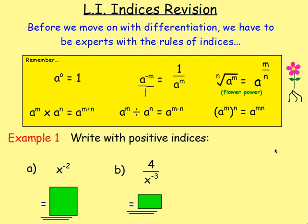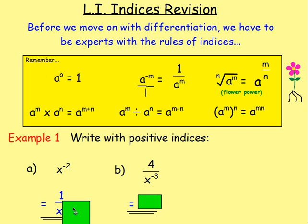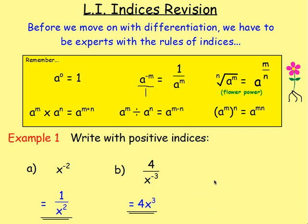Let's try some examples. Example one: write these with positive indices. So x to the power of negative 2 — what you want to do is change the index from a negative to a positive, so you move the base and the index to the bottom of the fraction. On the top you'd be left with 1, and in the bottom you'd have x to the power of positive 2. Next: if you have 4 over x to the power of negative 3, you move x to the power of negative 3 from the bottom up to the top. So you'd have 4x to the power of positive 3.